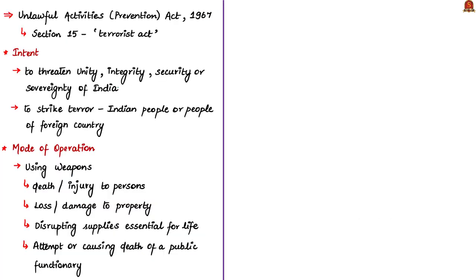One important thing about this act is that Section 15 defines the term 'terrorist act' in two parts. The first part deals with intention — any act with intent to threaten the unity, integrity, security or sovereignty of India, or any act with intent to strike terror in the people of India or a foreign country. The second part deals with the mode of operation and the damages of the terrorist act.